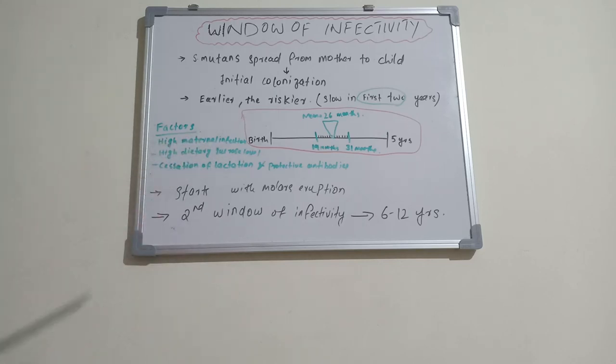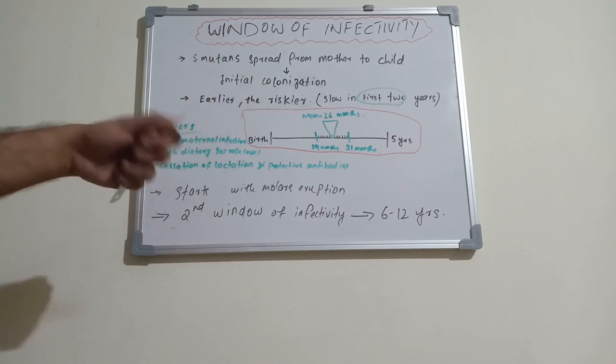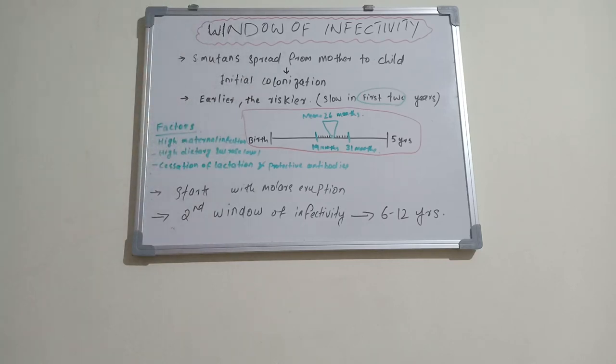If high maternal infection is there, there is high chances of colonization and can be earlier colonization. If the diet has high sucrose content, there are earlier chances of colonization. Earlier it is, more risky. The protective effect of breast milk is giving protection or delaying of this colonization.